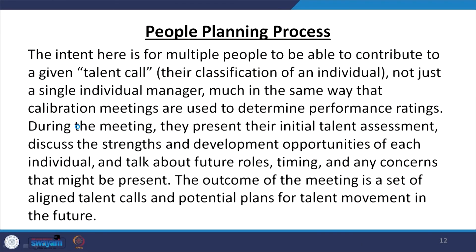In the people planning process, the intent is for multiple people to be able to contribute to a given talent call — like a project team. There is a head who is given this task: go ahead, take your team, make your team and go fast. It is not just a single individual manager, much in the same way that calibration meetings are used to determine performance ratings — but there is a limitation: this talent call will not be only for a particular person waiting for the conditions.